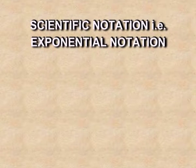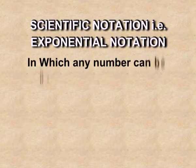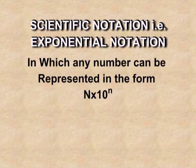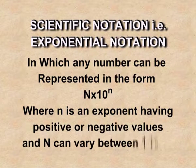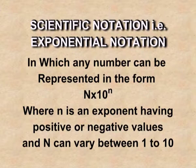Dear students, in chemistry we do experiments and deal with theoretical calculations, and there are uncertainties in the result. To have results with certainty, we follow some rules. Scientific notation, also known as exponential notation, is one in which any number can be represented in the form N × 10ⁿ, where n is an exponent having a positive or negative value, and N is between 1 and 10.